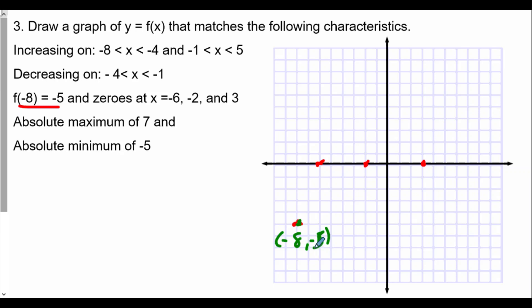We're increasing from x equals negative 8 to x equals negative 4. So somewhere around negative 4, I'm going to draw a line going upwards until we get to negative 4. With a maximum of 7, I can place the point negative 4 comma 7 as my maximum — going up 1, 2, 3, 4, 5, 6, 7. So we can establish that point and connect all the way up there.